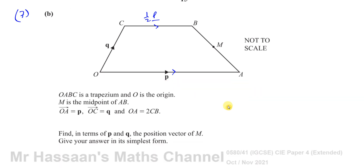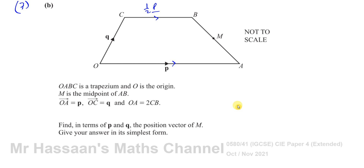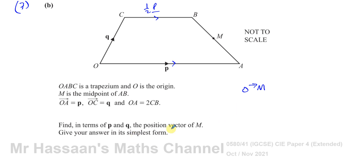It says: find in terms of p and q the position vector of M, giving your answer in the simplest form. The position vector of a point means from O to that point. Whenever they ask about the position vector, you will always find an origin O in your diagram.